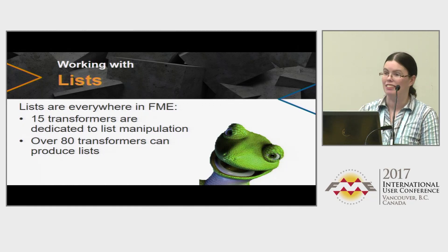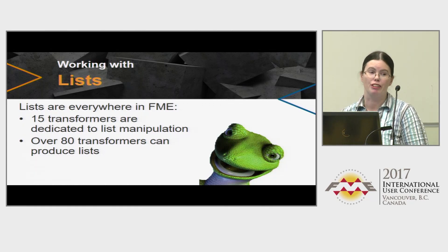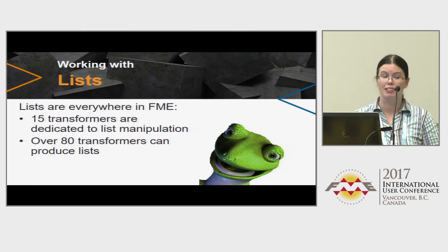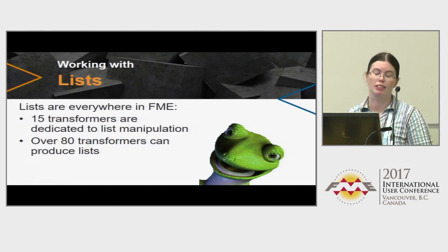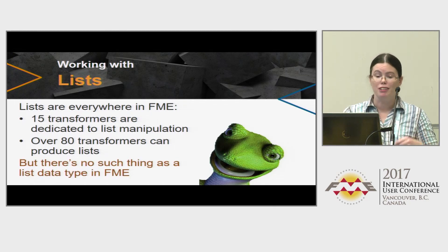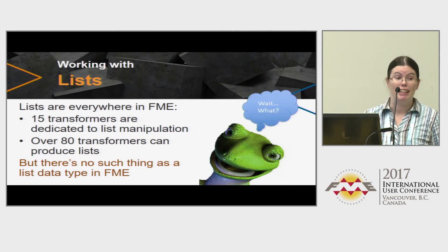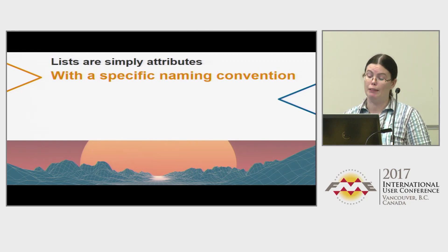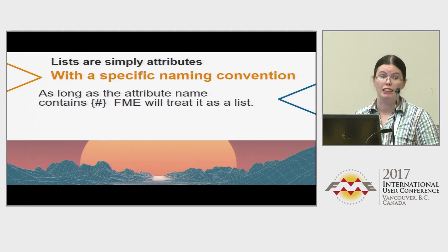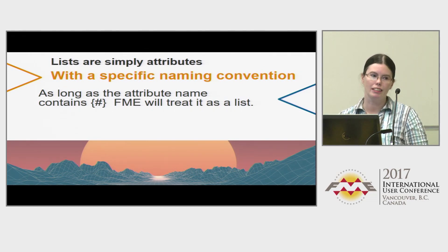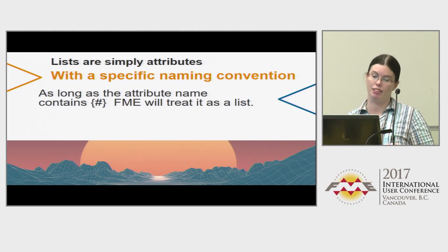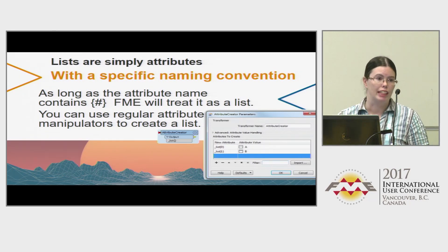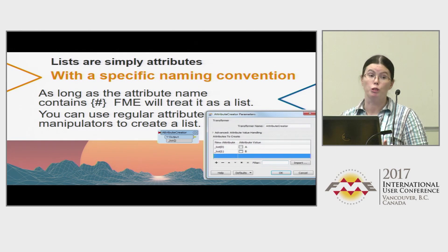So, working with lists. If you've used FME, chances are you've seen a list. There are 15 transformers dedicated to lists, but over 80 transformers can produce a list. But there's no such thing as a list data type in FME — lists are simply attributes with a specific naming convention. If you've got braces with a number in it, FME will assume it's a list. So you can use regular attribute manipulators like the attribute creator or attribute manager to create a list.